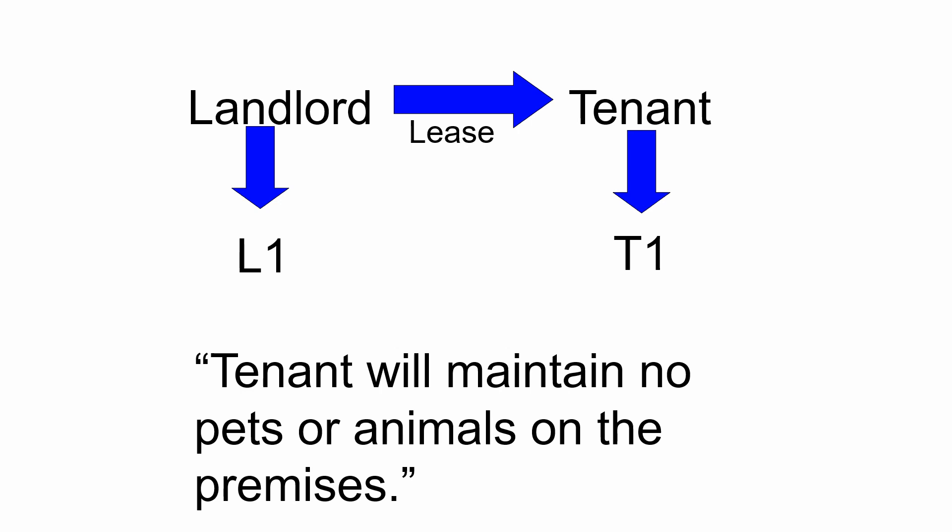In another example, the tenant promises the landlord that the tenant will maintain no pets or animals on the premises. It's a benefit to the landlord not to have to worry about pets damaging the property, and it's a burden on the tenant. This illustrates that covenants can involve either an affirmative act or a negative promise — promising to refrain from certain actions. Either kind is a perfectly valid covenant.